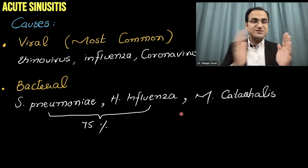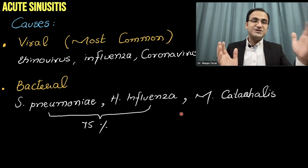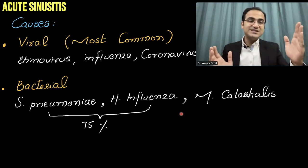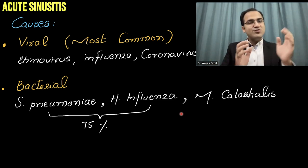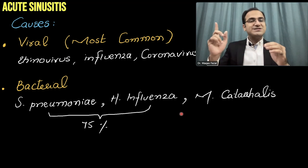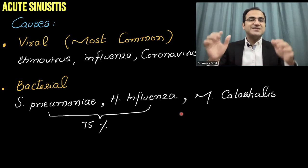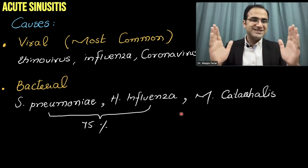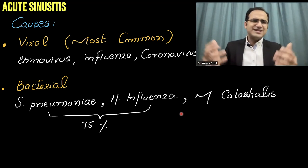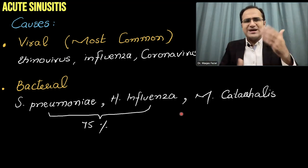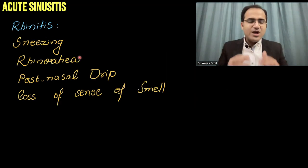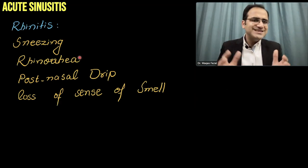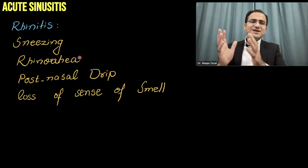This is called the double worsening scenario: the patient got the flu, was improving, then worsened again. That is the classical presentation of bacterial sinusitis.